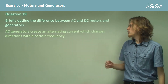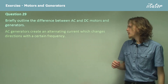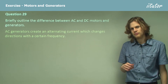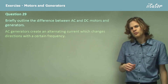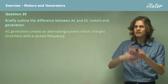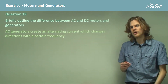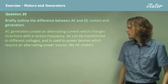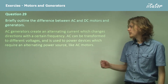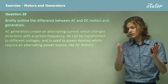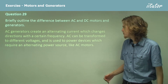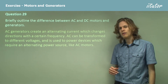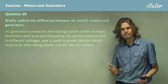AC generators create an alternating current which changes direction with a certain frequency. We use slip rings so that no matter where it is in its cycle, we can carry the electricity from it. AC can be transformed to different voltages, which is very useful, especially for transmission, and it can provide power to devices like AC motors.